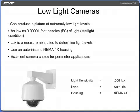Low light cameras can produce a picture at extremely low light levels, some as low as 0.00001 foot candles of light — starlight condition. Lux is also a measurement used to determine light levels. Low light cameras use an auto iris and NEMA 4X housing.